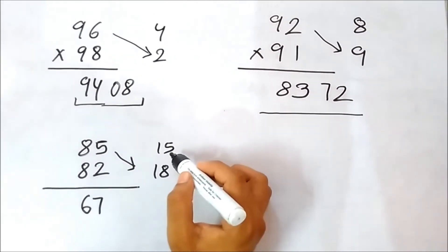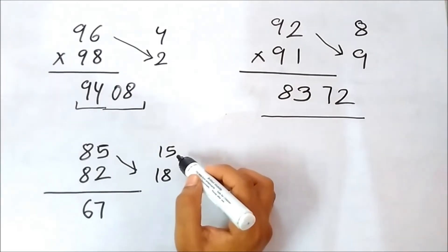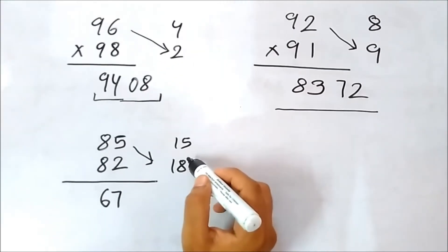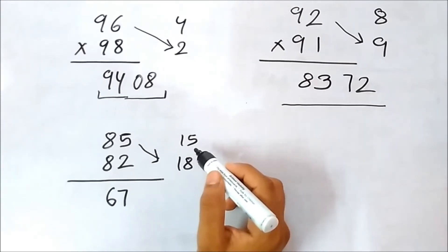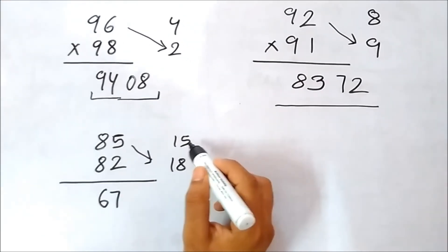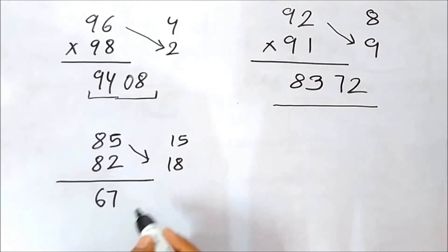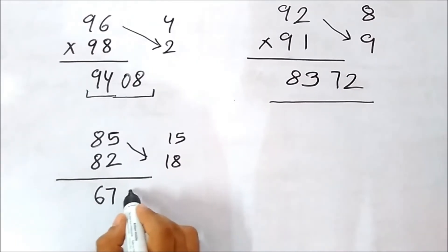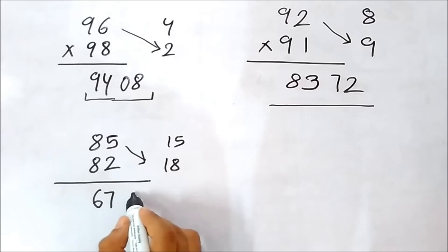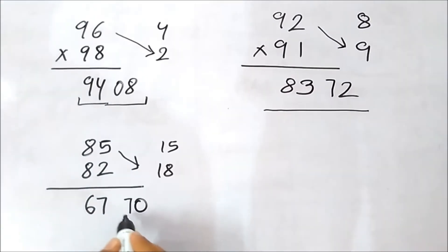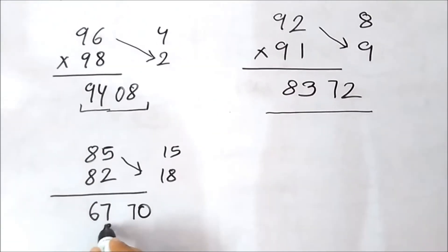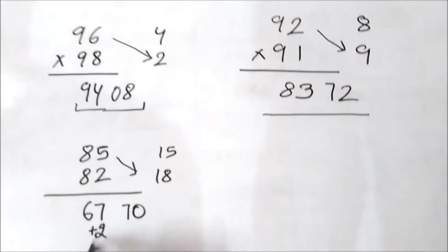Now next step is to multiply 15 and 18. So it's a little big calculation. So how we should do? You can do it in your mind or you can do it in the side rough note. So here by multiplying 15 and 18, we will get 270. So we have to write only the last two digits 70 and the 2 will go in carry to the next digit.